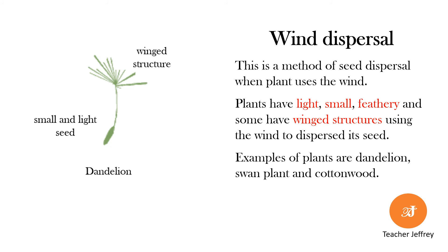The dandelion, swamp plant, and cottonwood use wind for seed dispersal. These plants have seeds that are light, small, and feathery, with some having a winged structure. This method of dispersal is called wind dispersal.